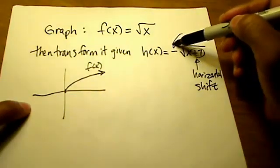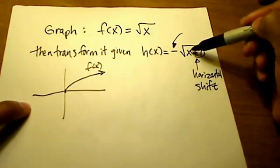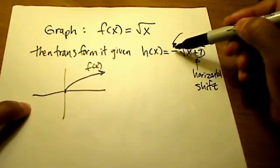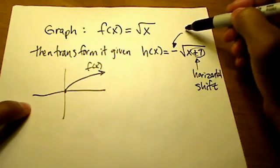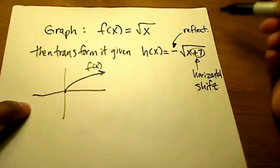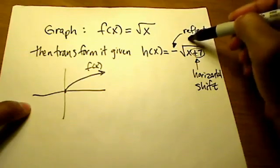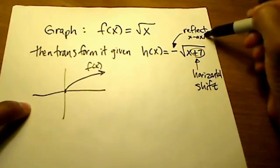And this negative sign that's outside of the square root that's not directly affecting the x but outside of the function is a reflection. It's a reflection over the x-axis and that's also important.